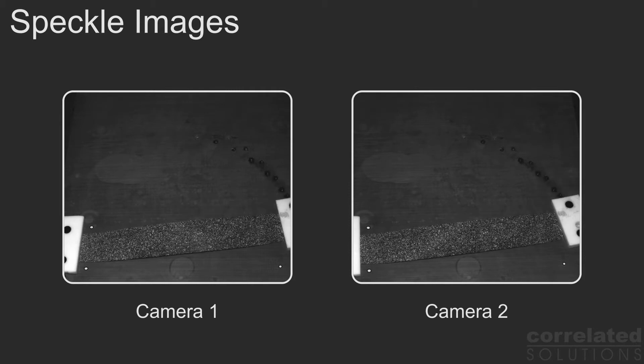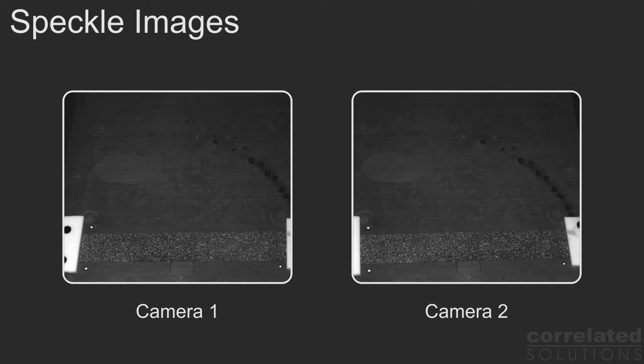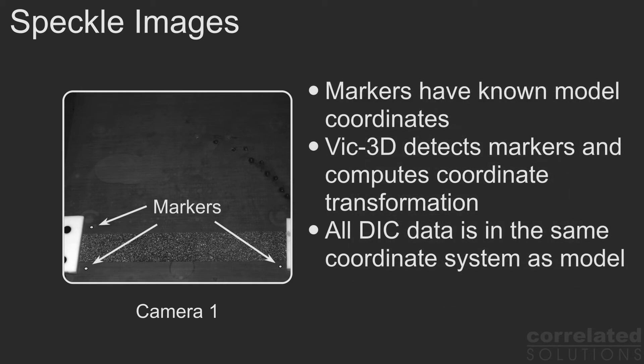Our goal is to quantitatively compare FE and DIC results at the same spatial positions. For this comparison to work, we need to have the measurement and model data in the same coordinate system. A simple way to accomplish this is to use markers on the test fixture with known model locations. The VIC-3D software can recognize these markers and then compute the coordinate transformation required to align the DIC data with the model.